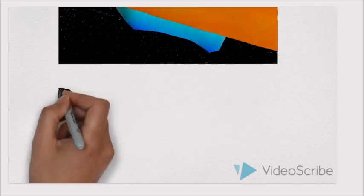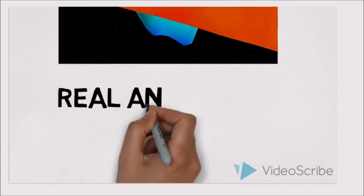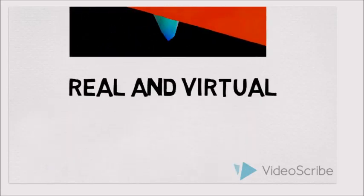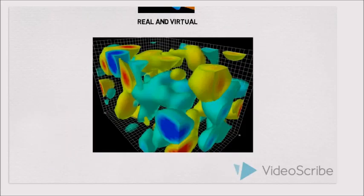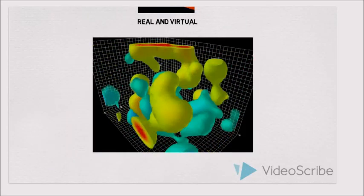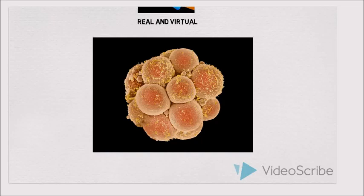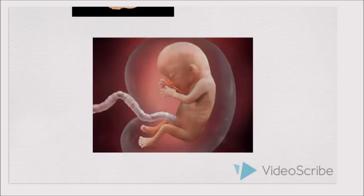There are two types of particles: virtual and real. Virtual particles are like embryos that don't get attached to the womb and get destroyed. Real particles are like the foetus that get attached to the womb, derive the energy and evolve further.